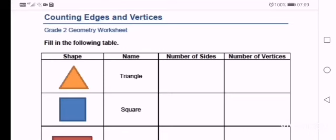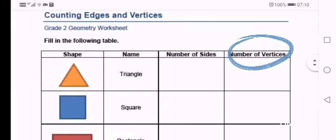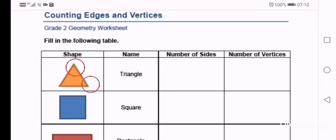So the first shape is a triangle. A triangle has one, two, three sides. So in the column that says number of sides, you're going to write the number three. Then they say number of vertices. So remember vertices is another word for corners. So again, a triangle has one, two, three corners. So in the column that says number of vertices, write again the number three.